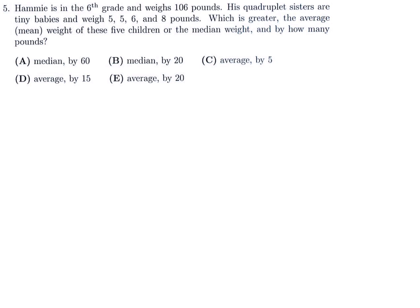Hammy is in the sixth grade and weighs 106 pounds. His quadruplet sisters are tiny babies and weigh 5, 5, 6, and 8 pounds. Which is greater, the average weight of these five children or the median weight, and by how many pounds? The average is (106 + 5 + 5 + 6 + 8) divided by 5, which equals 26.